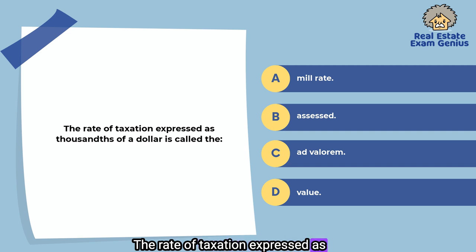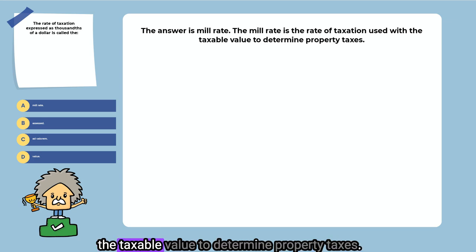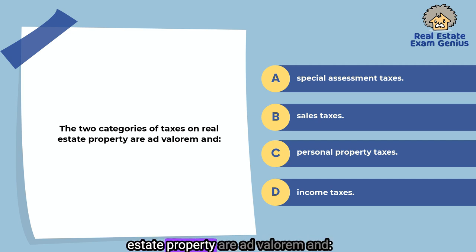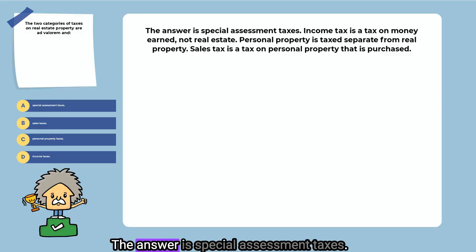The rate of taxation expressed as thousandths of a dollar is called the: mill rate, assessed, ad valorem, or value. The answer is mill rate. The mill rate is the rate of taxation used with the taxable value to determine property taxes. The two categories of taxes on real estate property are ad valorem and special assessment taxes. Income tax is a tax on money earned, not real estate. Personal property is taxed separately from real property. Sales tax is a tax on personal property that is purchased.